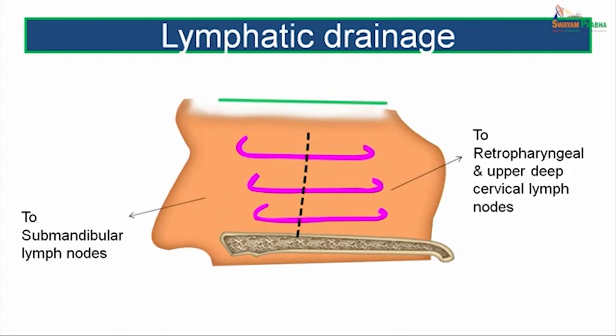For lymphatic drainage, lymph from the anterior part of the lateral wall drains into the submandibular lymph nodes, while lymph from the posterior part drains into the retropharyngeal group and the upper deep cervical group of lymph nodes.